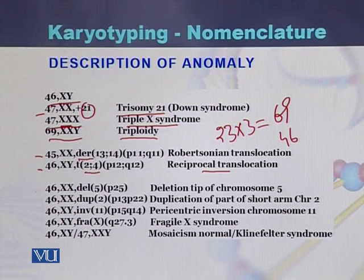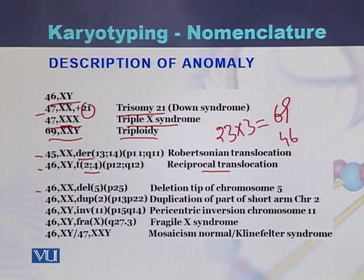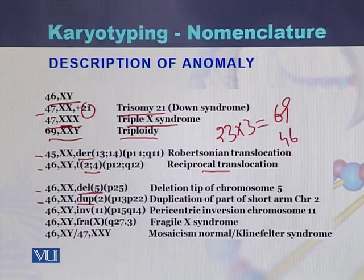In the case of 46,XXdel, it means there is a deletion on chromosome 5. In the case of 46,XXdup, dup stands for duplication — there is a duplication on the short arm of chromosome 2.